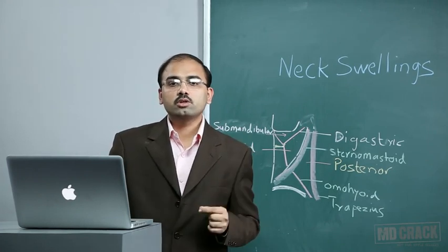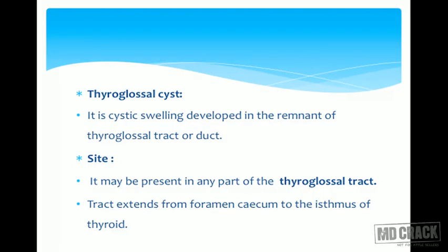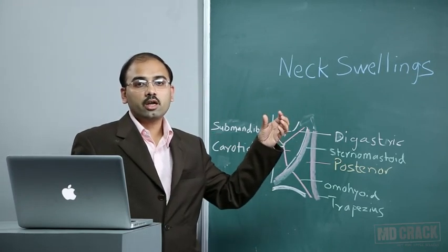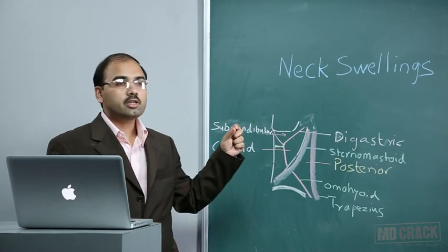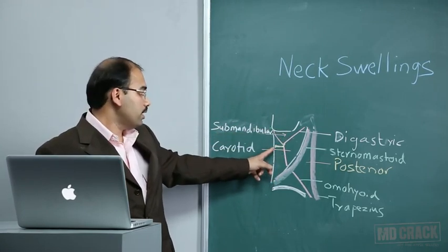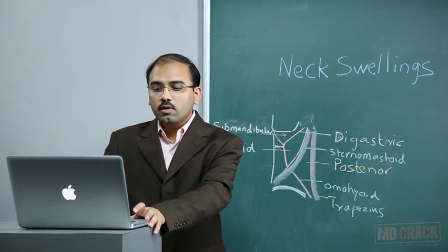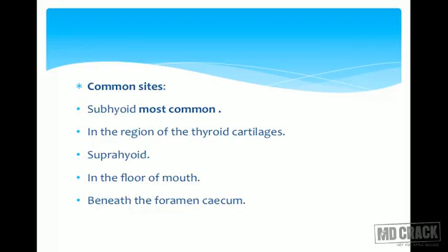Thyroglossal cyst is a cystic swelling developing in the remnant of the thyroglossal tract or duct. It may be present in any part of the thyroglossal tract, which extends from the foramen cecum to the isthmus of the thyroid gland, passing behind the hyoid bone. The most common site is the subhyoid region — this is an important point. It can also occur in the region of thyroid cartilage, suprahyoid region, floor of the mouth, or just beneath the foramen cecum.